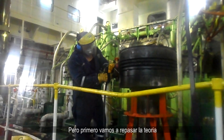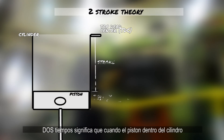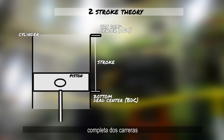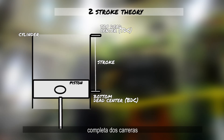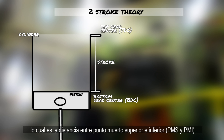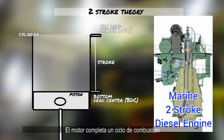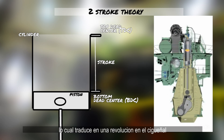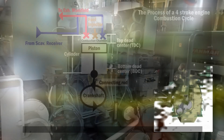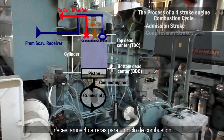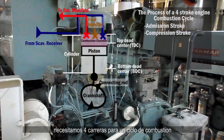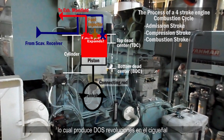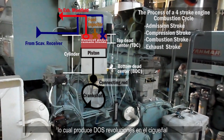But first, let's talk about theory. Two-stroke engines means that when the piston inside the cylinder completes two strokes — which is the distance between top dead center and bottom dead center — the engine completes one combustion cycle, which in turn generates one revolution in the crankshaft. On four-stroke engines, we need four strokes for one combustion cycle, and we produce two revolutions in the crankshaft.